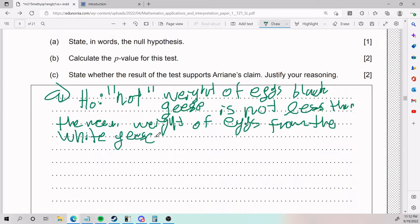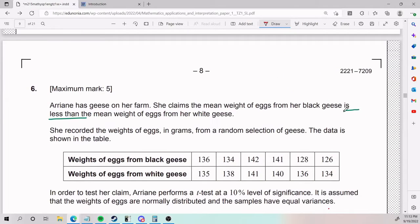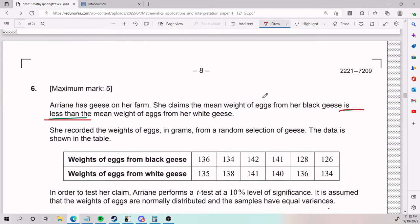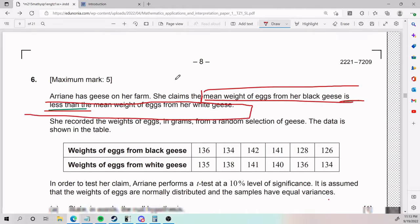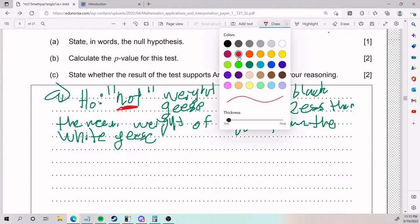The biggest intuition I can give you is that for null hypothesis, think of the word not. In this case, we put not before whatever the problem gives us, and the problem gives us is less than. So yes, we did take this whole thing and all we did was add the word not. That is part A.